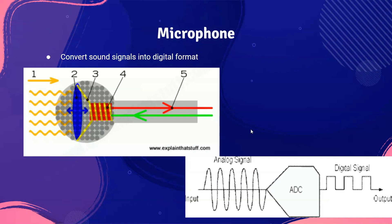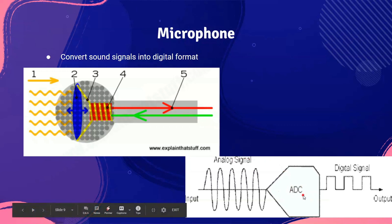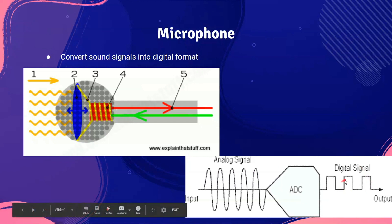Microphones are used to input sound into a computer by converting sound signals into digital format — zeros and ones — so the computer can understand it. When sound waves pass through the microphone, the diaphragm vibrates, producing an electrical signal. This electrical signal travels through a wire to the sound card, also called an ADC (Analog to Digital Converter), which converts the electrical signals into zeros and ones for the computer to process.